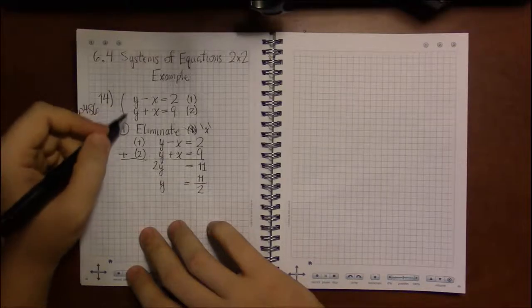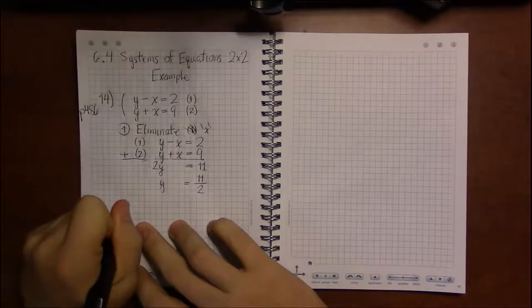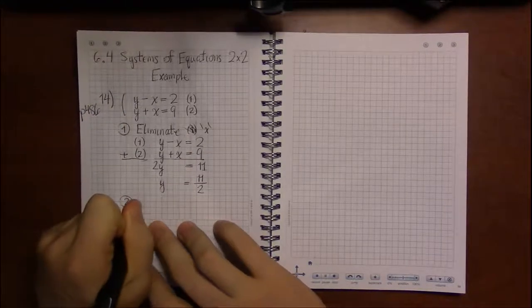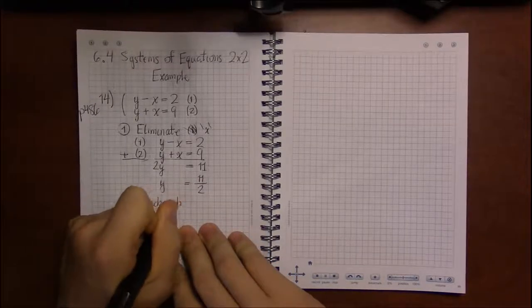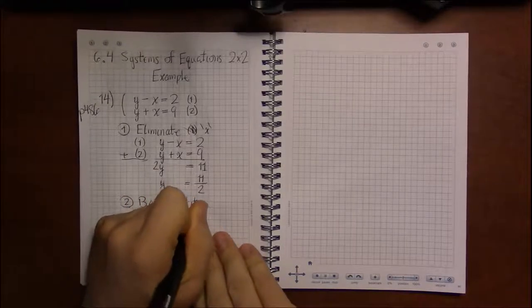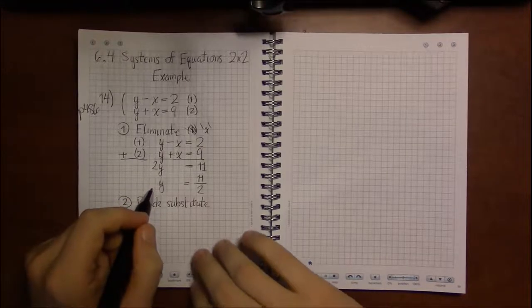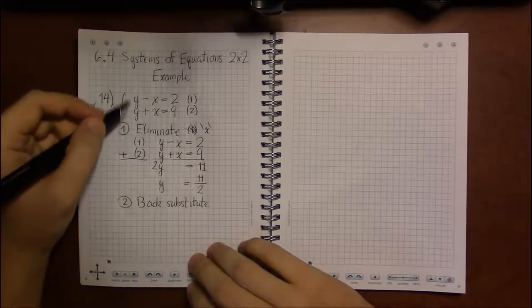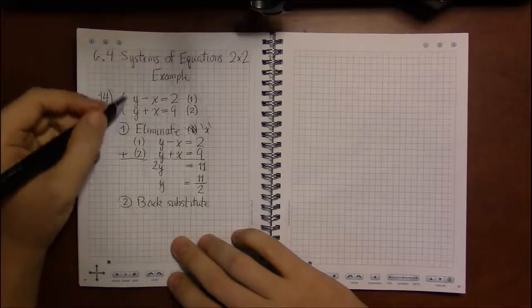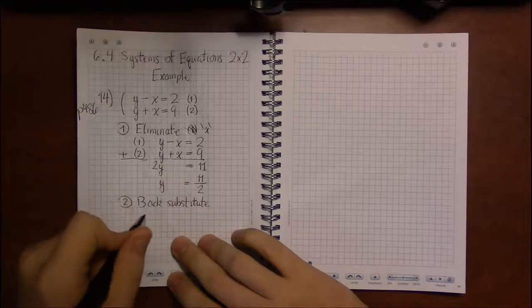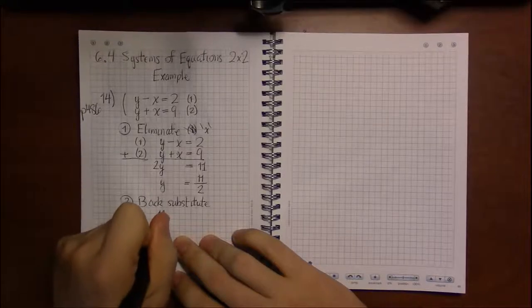Next we could eliminate y by subtracting equation 1 from equation 2, or we can take the probably more familiar route of simply back substituting. Even though this is a bit more tedious because in this case we're going to have to deal with arithmetic with fractions, it doesn't really matter which one we substitute into, 1 or 2. It's about the same difficulty. So I'll pick 2.